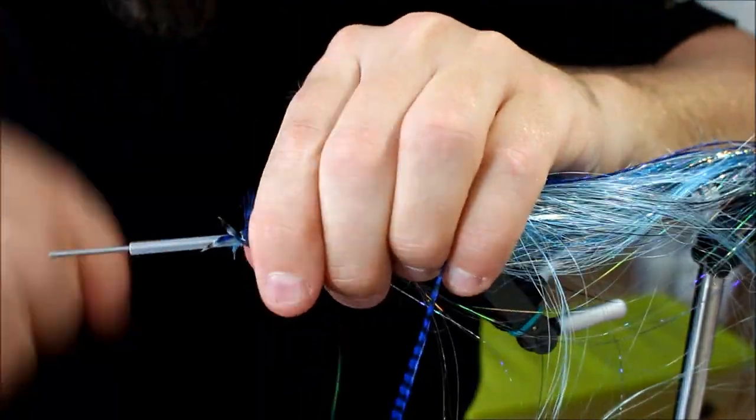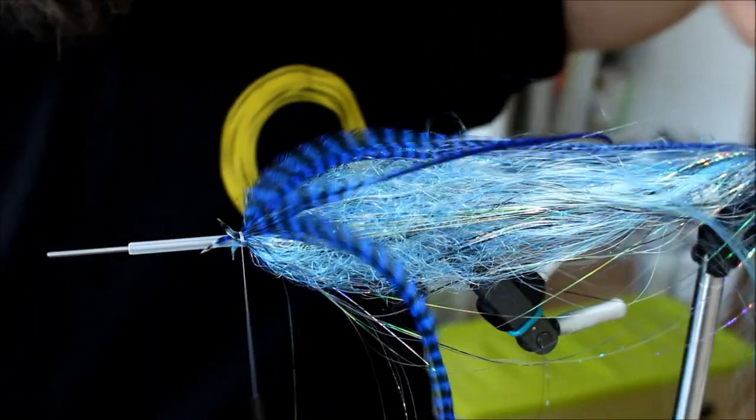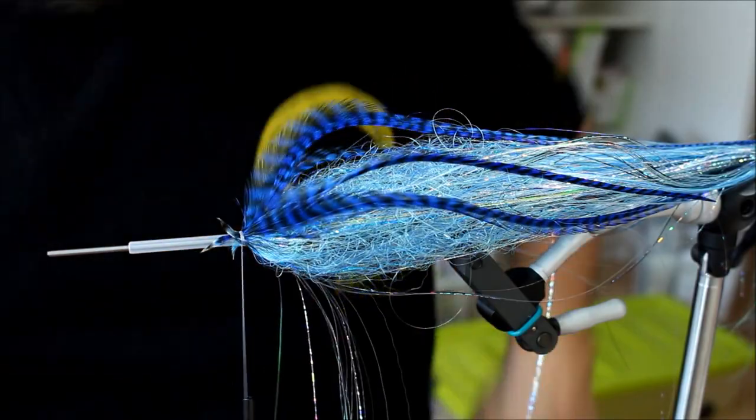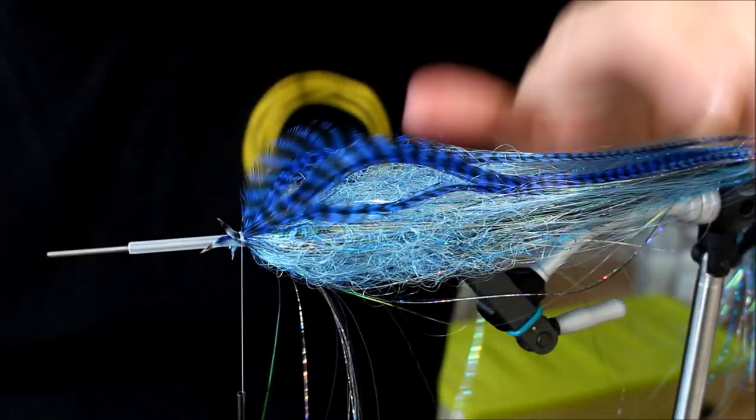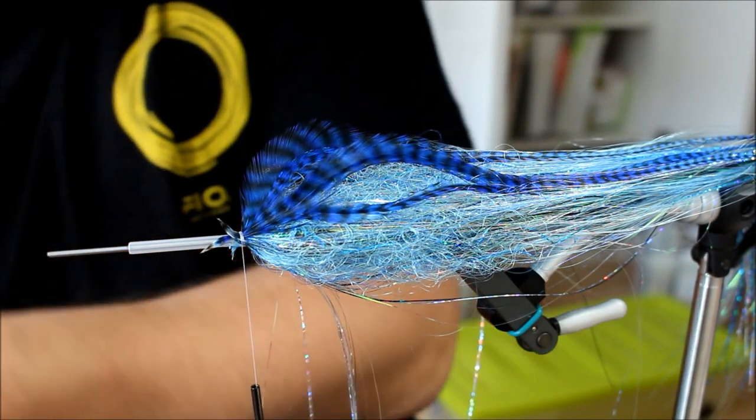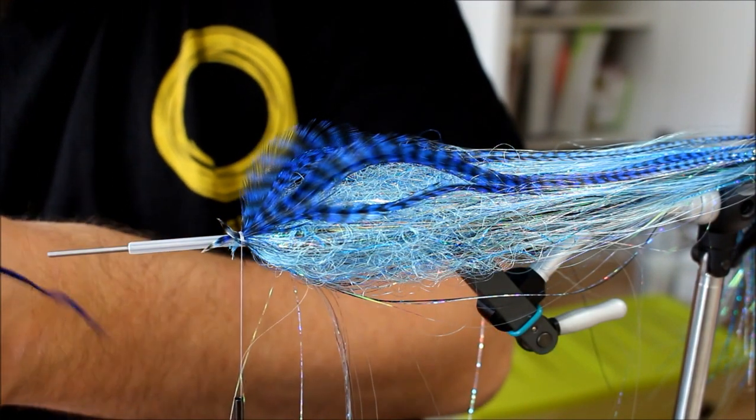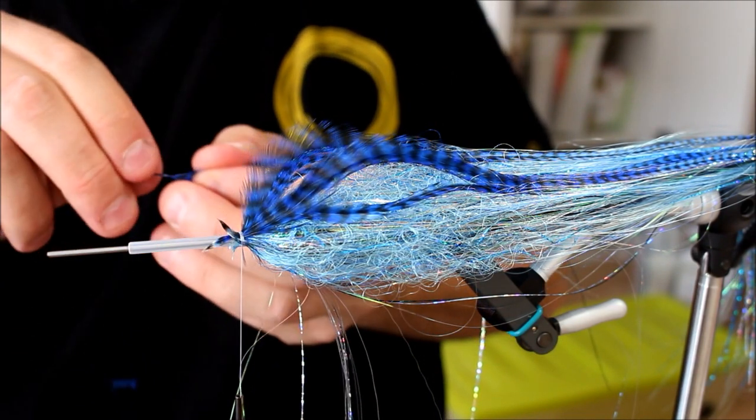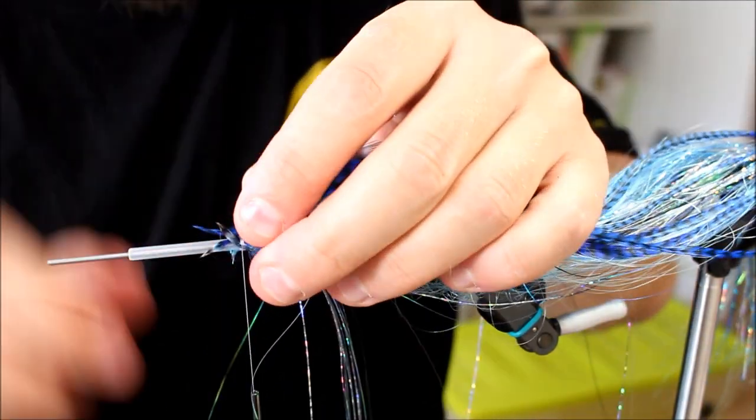They move a lot in the water and add a lot of movement and also a lot of contrast. This actually now looks like a small bonito. And bonito is what Marlin feeds on most of the time, so that can't be a bad thing.